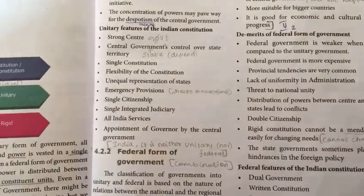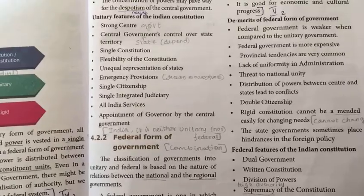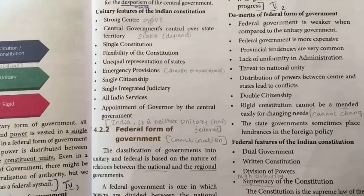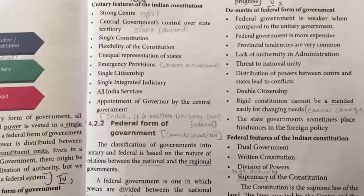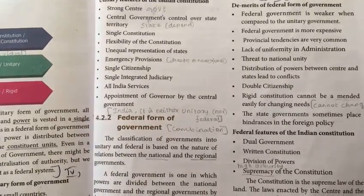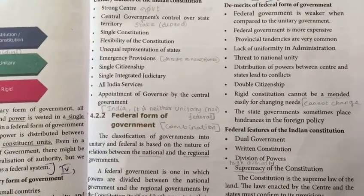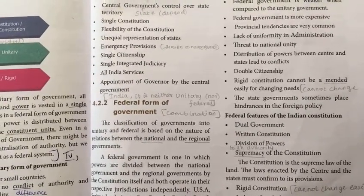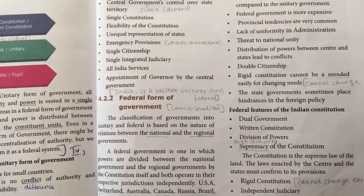Unitary features of the Indian constitution include: strong center — meaning a strong central government; central government's control over state territory; single constitution; flexibility of the constitution; unequal representation of states; emergency provisions; single citizenship; single integrated judiciary; All India services; and appointment of governor by the central government.